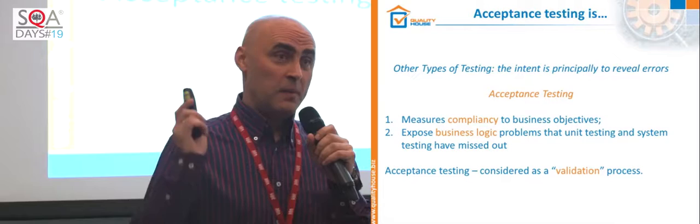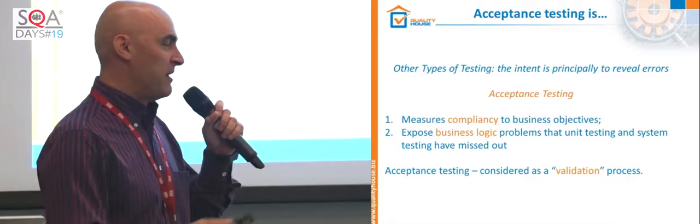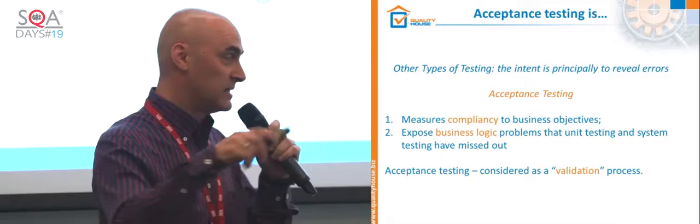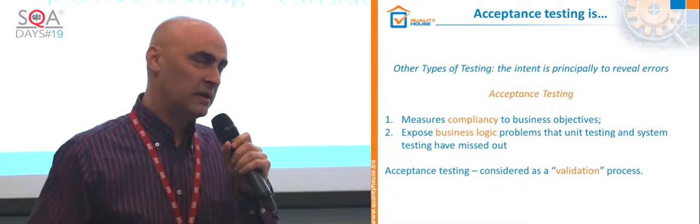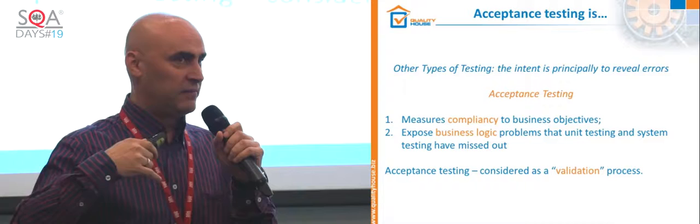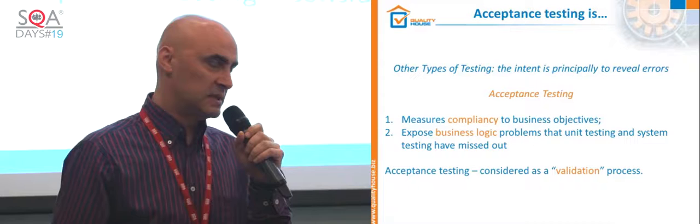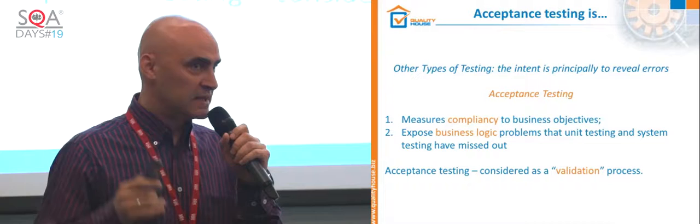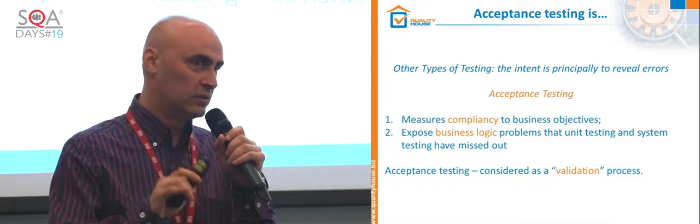Based on that, your end customer will decide whether to accept or to reject the system. This is really a bit different than the other types of testing people are used to — unit testing, system testing, integration testing — because the objectives are different. In unit and system testing, you make sure you have found most of the serious defects before you go to acceptance testing. But in acceptance testing itself, that's not the target.